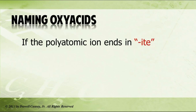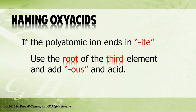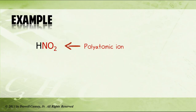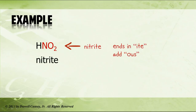If the polyatomic ion ends in -ite, use the root of the third element and add -ous and acid. For example, HNO2 — there's our polyatomic ion, and it is nitrite. Nitrite ends in -ite, so we add -ous: nitrous acid.